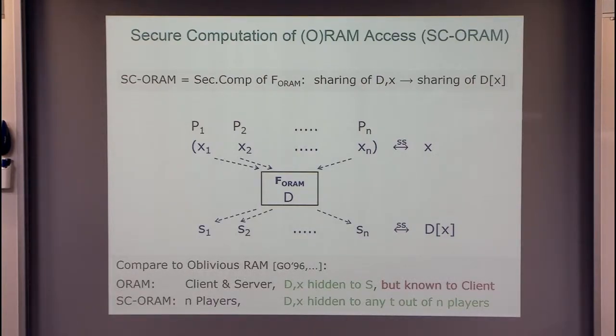However, we will ignore the writing in this talk just for simplicity. So I'll only focus on reading, although everything could be updated for reading and writing. So SCORAM is a secure computation of the functionality that starts from input sharing of D and X, and output is sharing of D at location X.